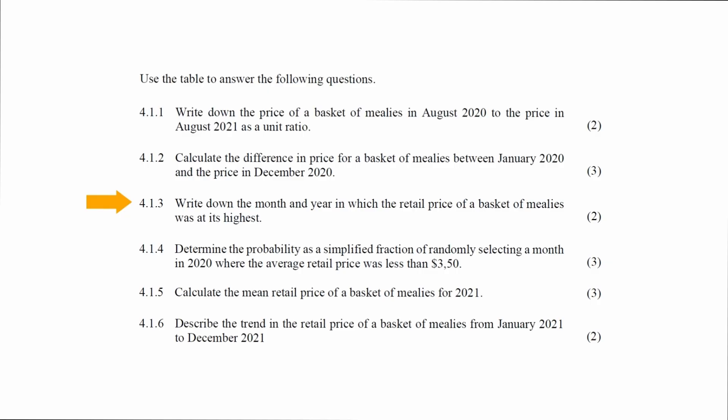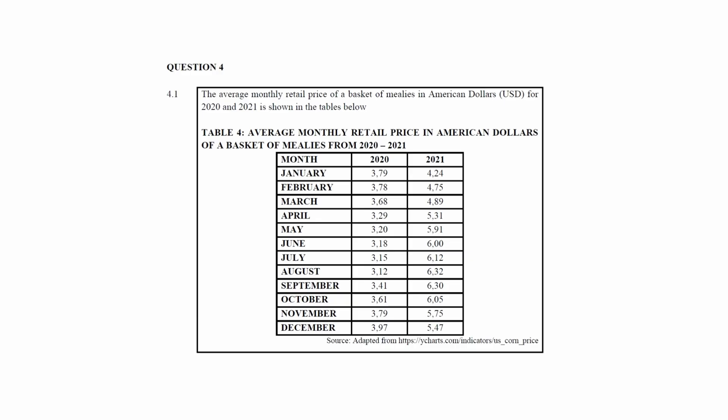In question 4.1.3, you have to write down the month and year in which the retail price of a basket of mealies was at its highest. From the table, the month and year in which the retail price was at its highest was August 2021.